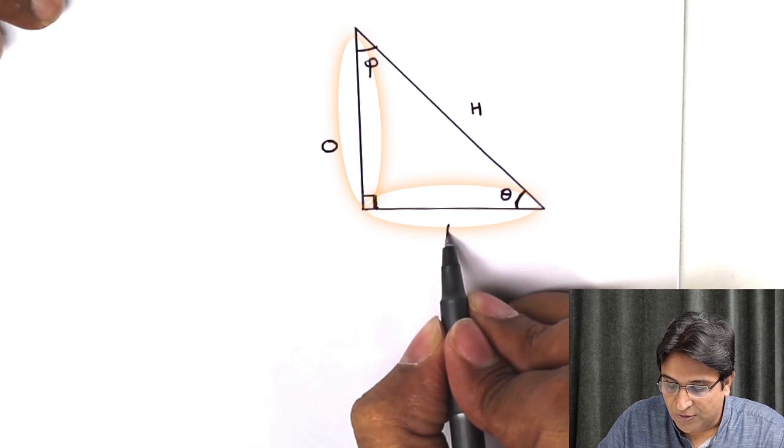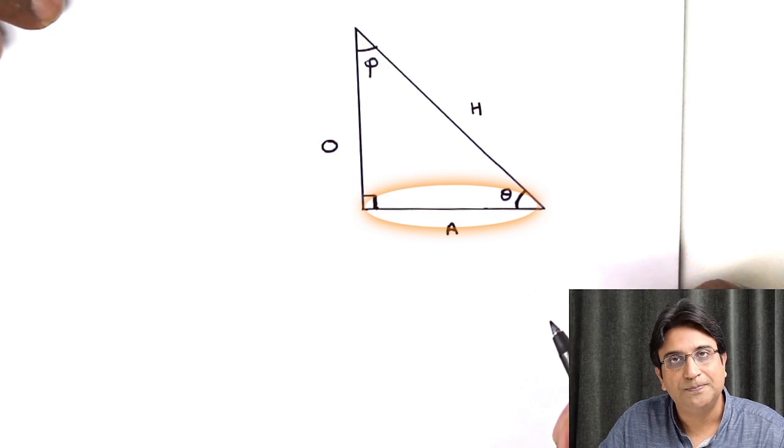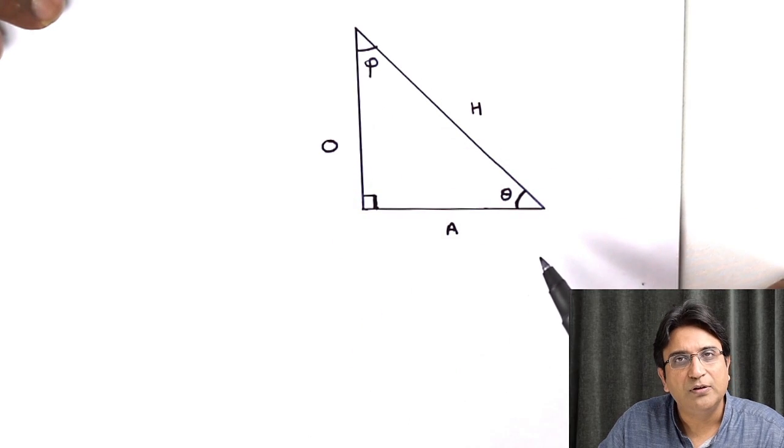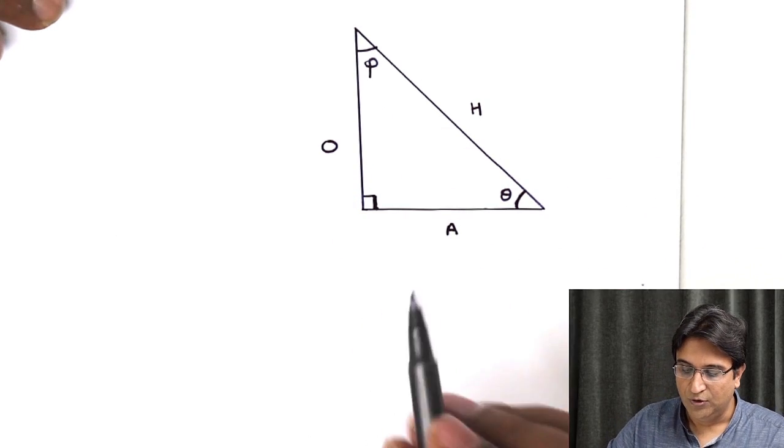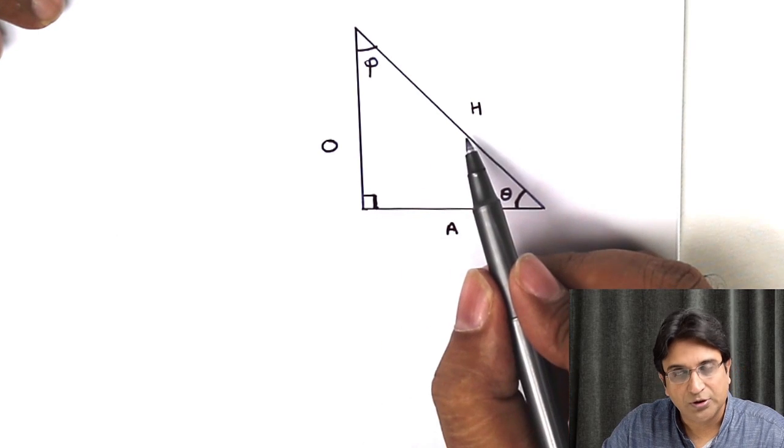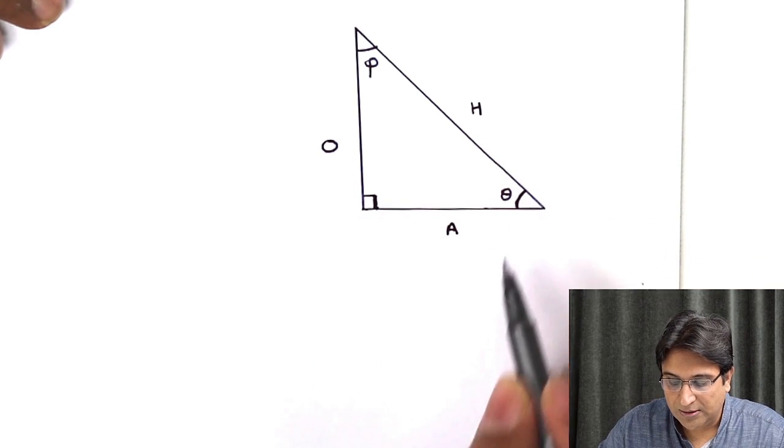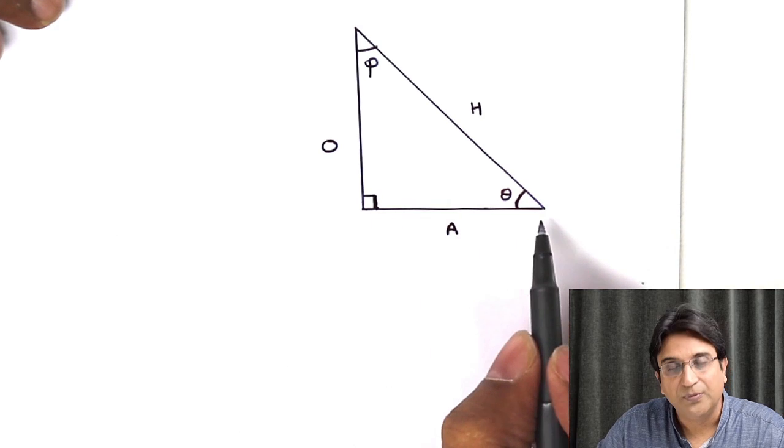And what is left is known as the adjacent. Alright? So, this is the way you name different sides of a right angle triangle. You have got the hypotenuse which is always opposite 90 degrees. You have got the opposite which is opposite the chosen angle, and adjacent which is the remaining side.